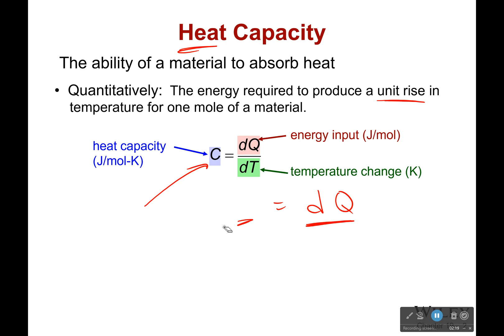Now, what do you think has a very high heat capacity? Maybe you're thinking metals — they're going to have a high heat capacity because they can take a whole lot of heat. And you're wrong. Remember, this is how much energy it takes to make it go up by one degree Kelvin. If you're looking at your oven, at the stovetop, that little coil burner — maybe you have a glass top so you don't see it.